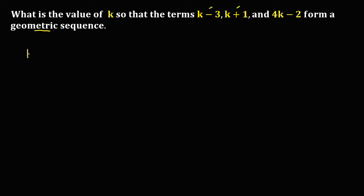So we can set up the proportion: (k minus 3) over (k plus 1) equals (k plus 1) over (4k minus 2).